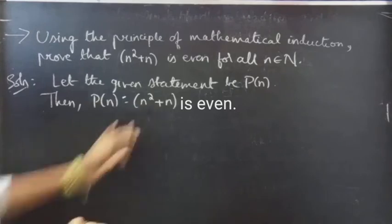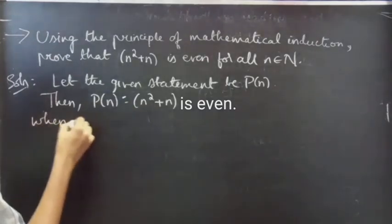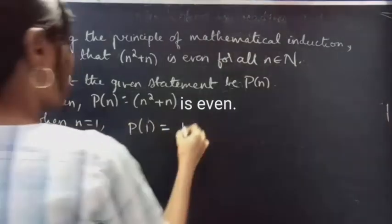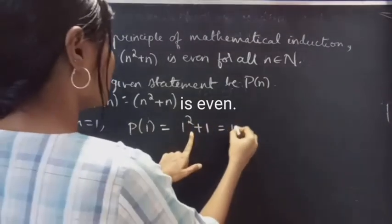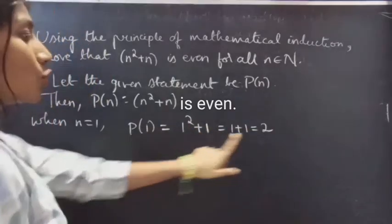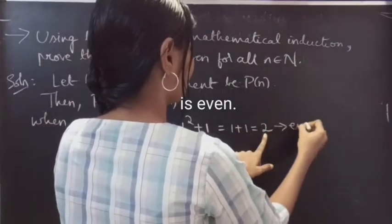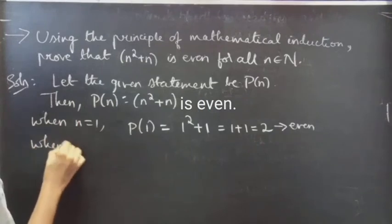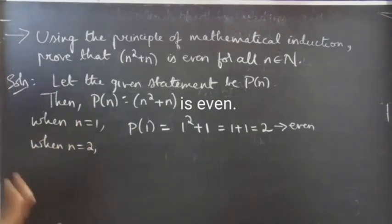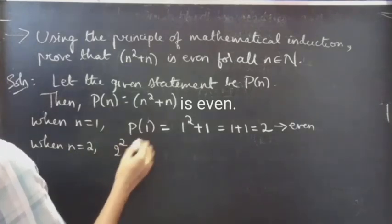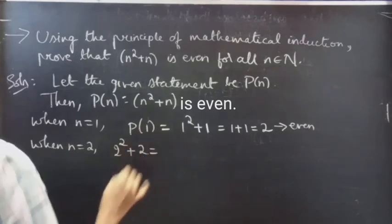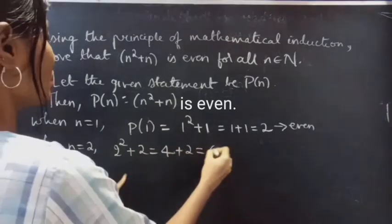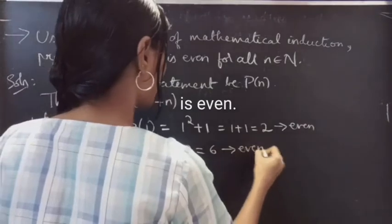We have to show that the given statement is even. Firstly, when n equals 1, P(1) equals 1 squared plus 1, which is 1 plus 1 equals 2. Since 2 is an even number, it belongs to natural numbers. When n equals 2, replacing n by 2 gives 2 squared plus 2, which is 4 plus 2 equals 6. Since 6 is also an even number, it belongs to natural numbers.